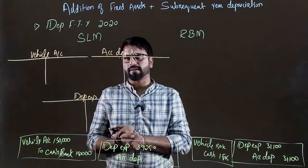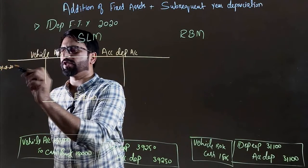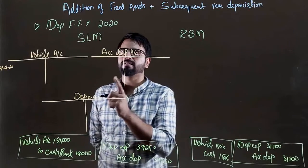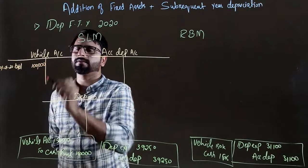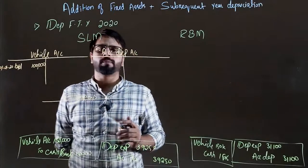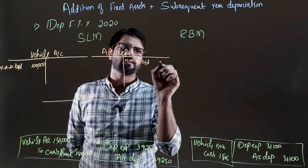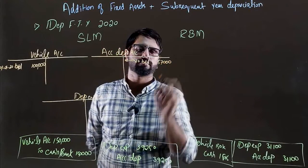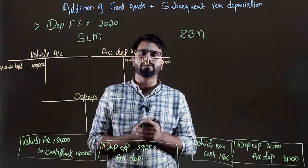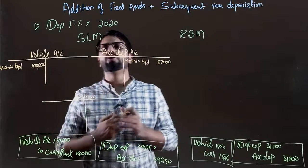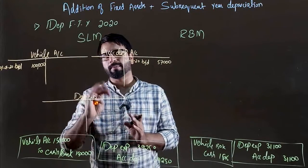Now we will have these journal entries here. When my year started — the year initial was 01/01/2020 — the opening value of assets, the balance brought down value was 100,000. The asset was 1,000,000 in the opening rate. The accumulated depreciation balance on 01/01/20 brought down balance was 57,000. These two are from last year. The depreciation expense closing balance of last year has no opening balance in the next year.